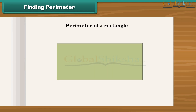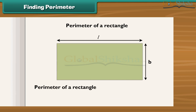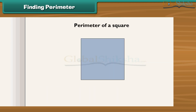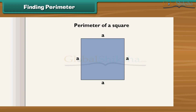Perimeter of a rectangle: if l is the length and b is the breadth, the perimeter equals l plus b plus l plus b, which is equal to 2 times l plus 2 times b. Perimeter of a square: a square is a special rectangle whose length and breadth are equal. If a is the length of one side, then its perimeter is a plus a plus a plus a, which equals 4 times a.